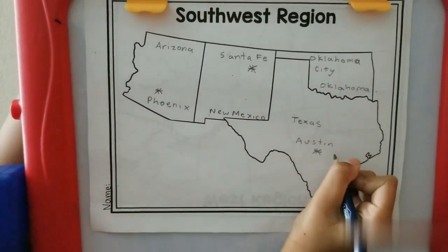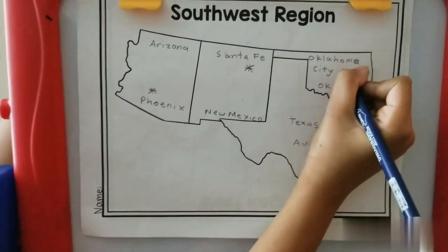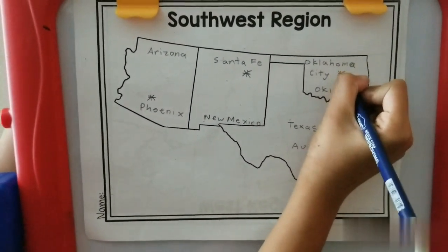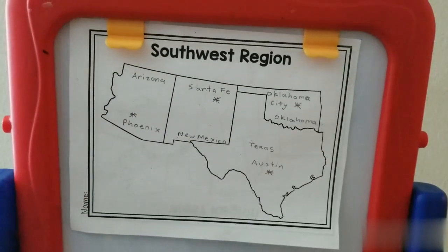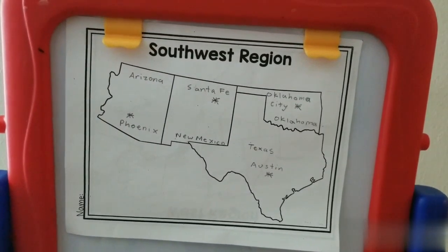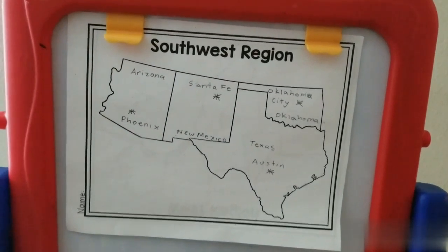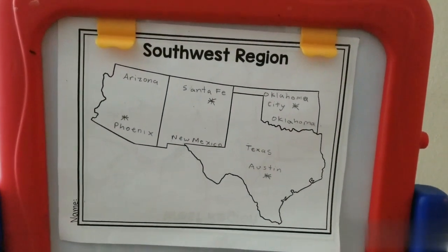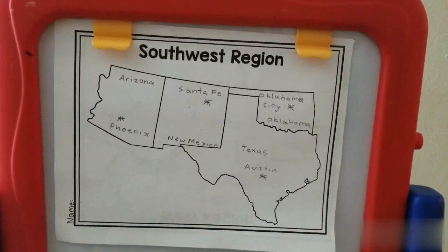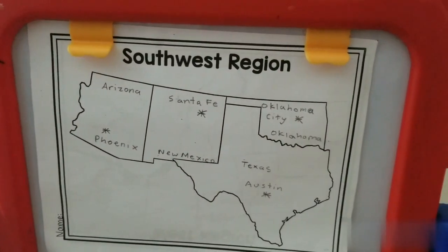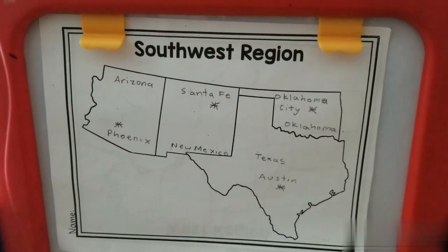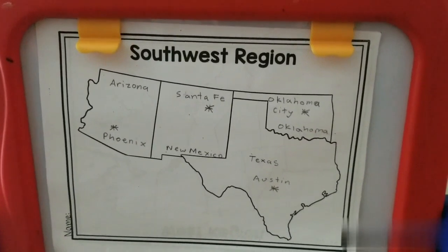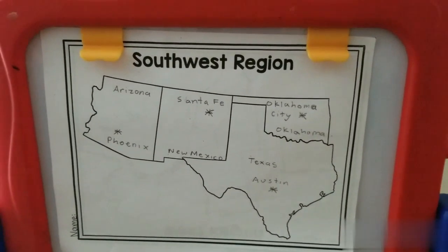And for Oklahoma City, it is right here. So this is the Southwest region map. In the Southwest region, we have only four states.